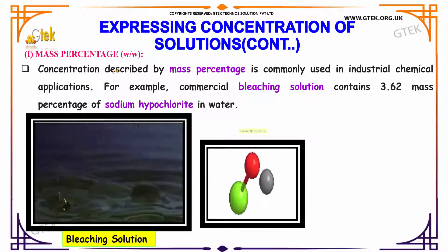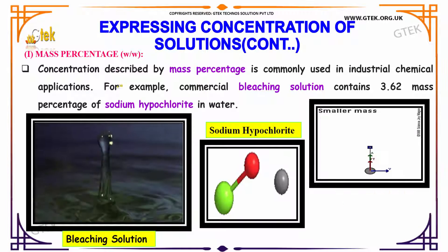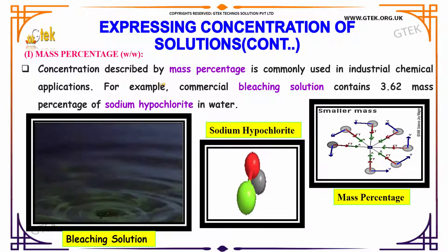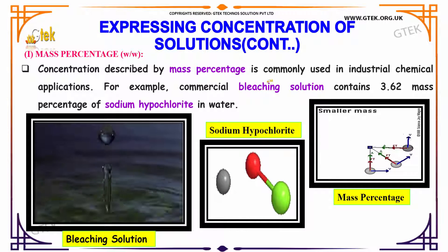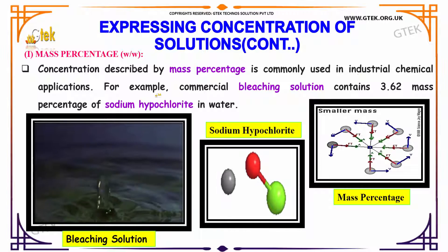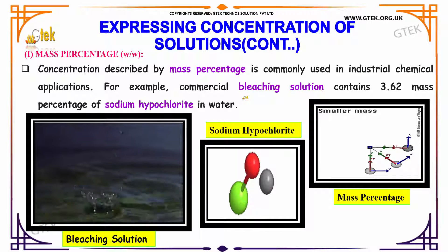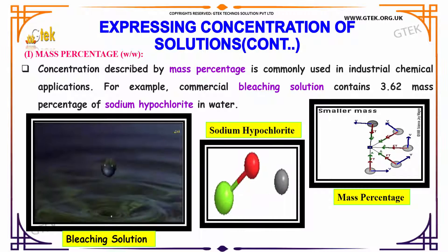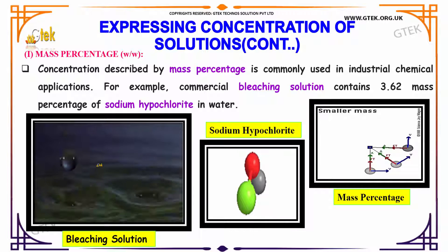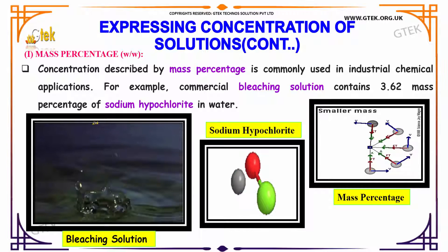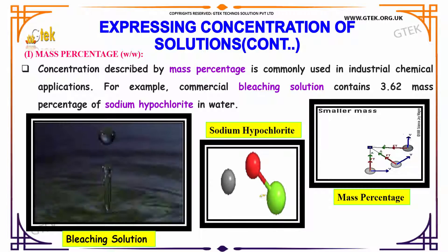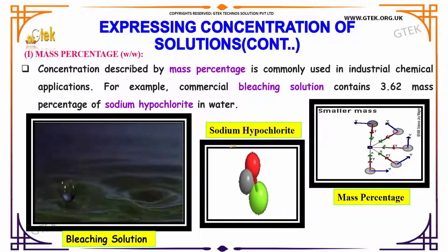Mass percentage: concentration described by mass percentage is commonly used in industrial chemical applications. For example, commercial bleaching solution contains 3.62 mass percentage of sodium hypochlorite in water.